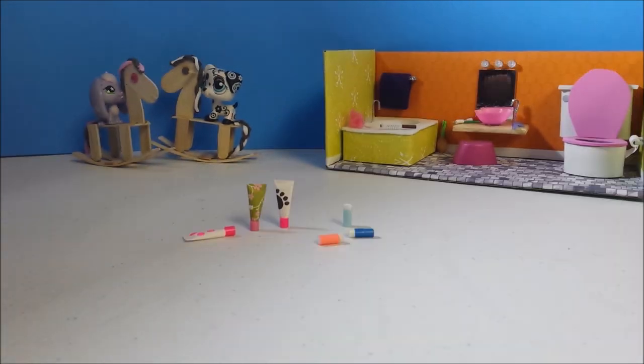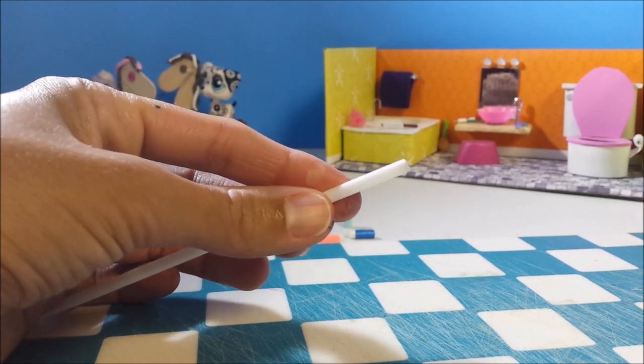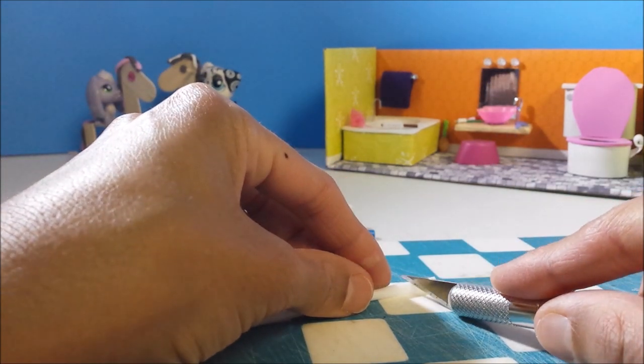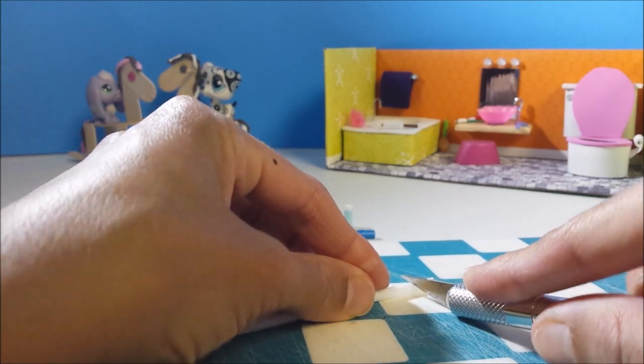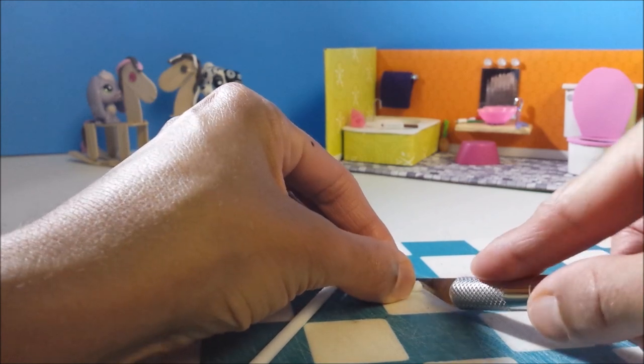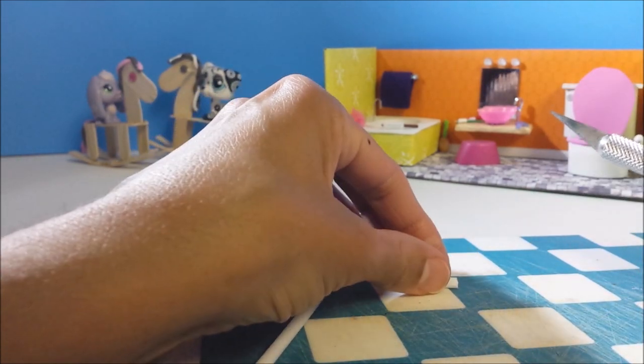Okay so let's get started. For the chapstick take your popsicle stick straw and an exacto knife and carefully cut off a section. Then you can either file or carefully use your exacto knife to straighten your edges.